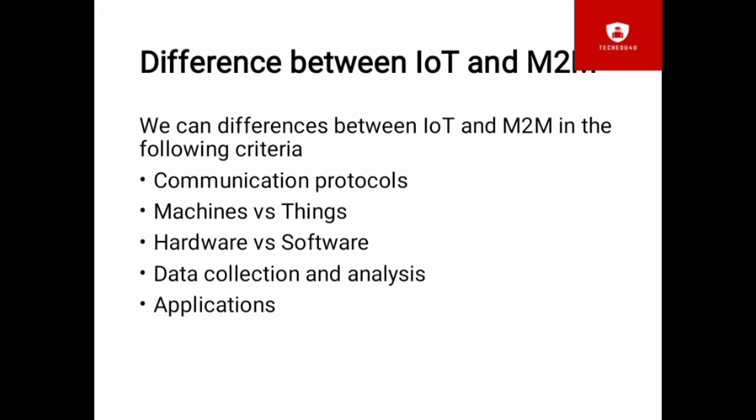When we go with the differences between the Internet of Things and mission to mission networks, we can differentiate them in particular criteria. These differences are in the technologies, architectural system architecture, or types of applications in the cloud. These are the criteria.